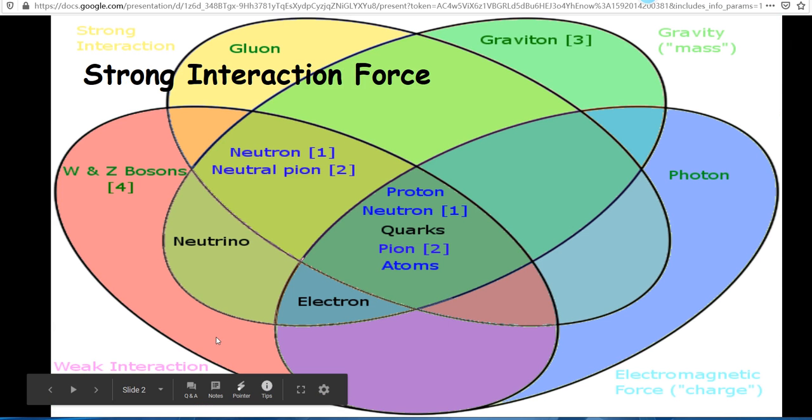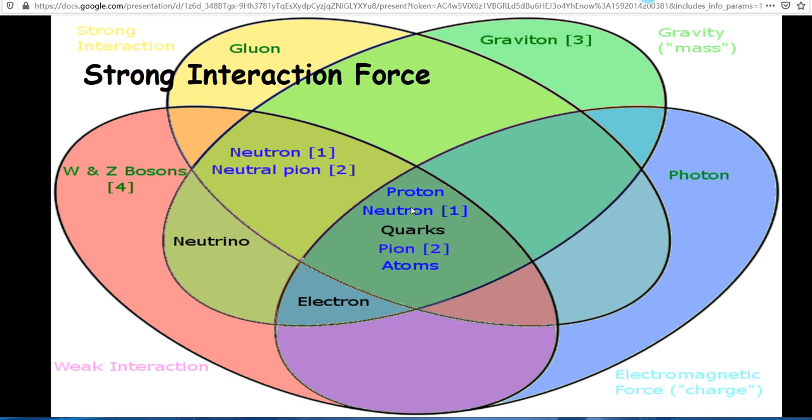The strong interaction force is a force that is produced by the exchange of gluons. It combines protons and neutrons together and holds quarks in protons and neutrons as well. This kind of force is the strongest force in the world.